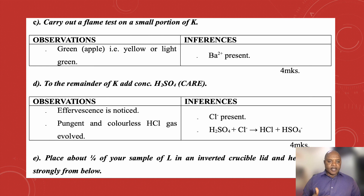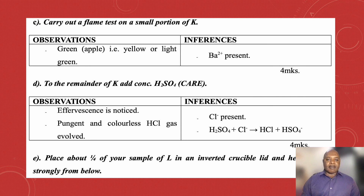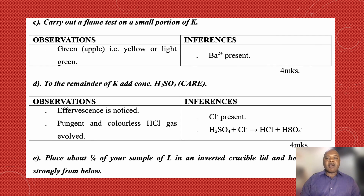Test B4: to the remainder of K, add concentrated sulfuric acid. My observation was that effervescence was produced — a pungent and colorless hydrogen chloride gas was produced. I realized that chloride ions are present, and when the salt reacts with concentrated H₂SO₄, you will see the hydrogen chloride gas being released.